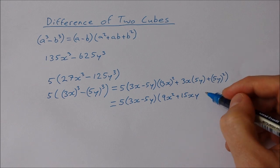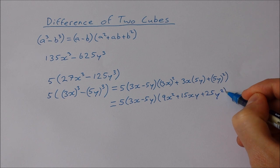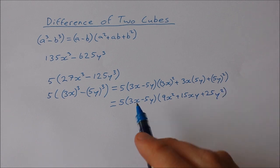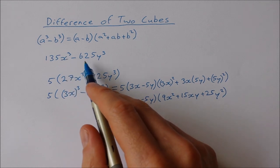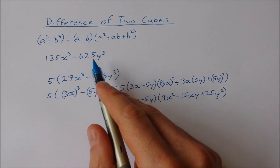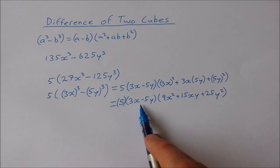So here I've factorized 135x³-625y³, and my factors are 5 times (3x-5y) times (9x²+15xy+25y²).